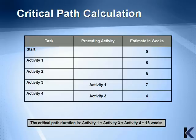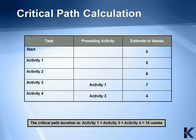Here's an example of how the critical path duration is calculated. Across the top of this table, you'll see the task, preceding activity, and the estimate to complete in weeks. Down the left side, you have the activities listed. Note that activity 3 is dependent upon activity 1 to be completed before it can begin, and activity 4 cannot begin until activity 3 is completed. Therefore, the critical path duration is calculated by adding activities 1, 3, and 4, giving a total of 16 weeks.